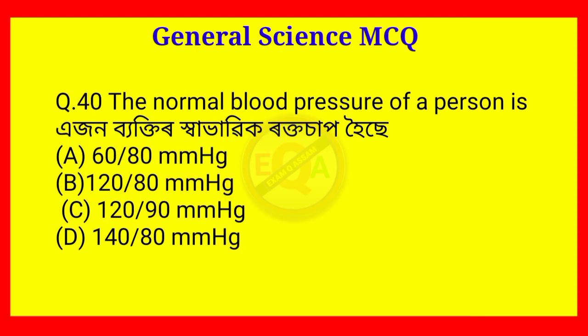Question number 40. The normal blood pressure of a person is? The answer is Option B — 120 by 80 mmHg.